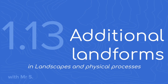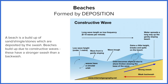Let's start off by looking at beaches. Beaches are created by the deposition of sediments — silt, sand, stone, and shingle — along the coastline, and that's created by waves. There are two types of waves we can discuss.